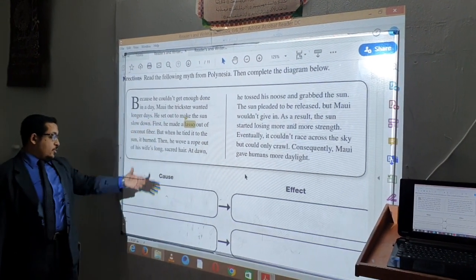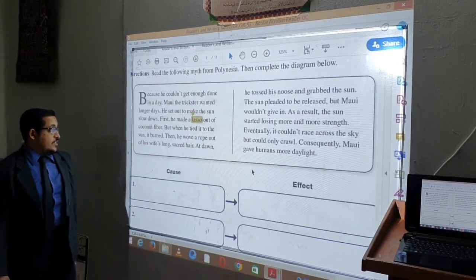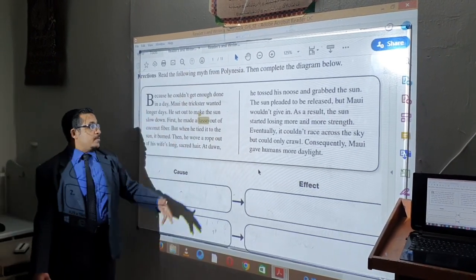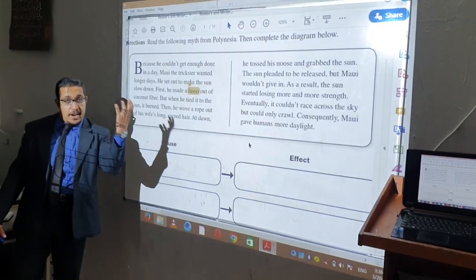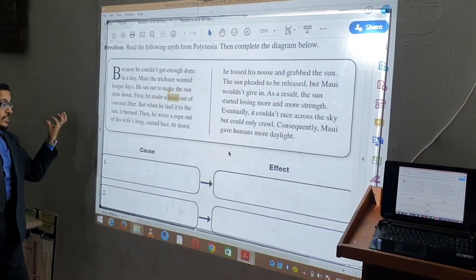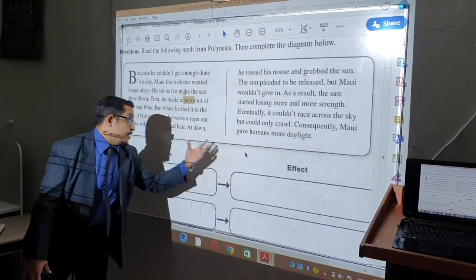In number two, when we read our second post, he said, First, he made the lasso out of coconut fiber. So it was very weak. As a result, what happened? As an effect, it burned.